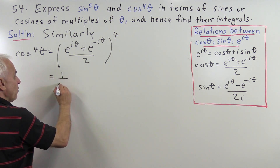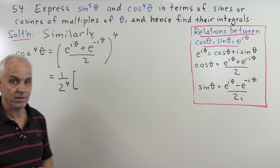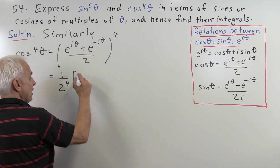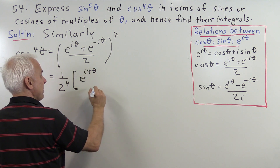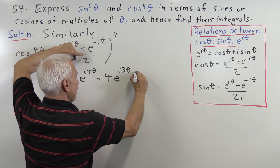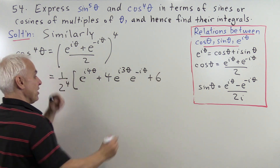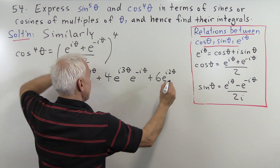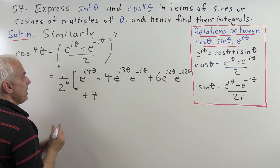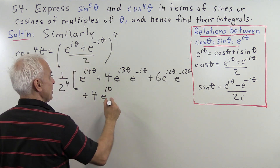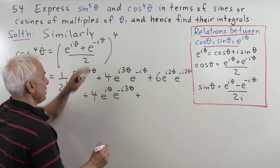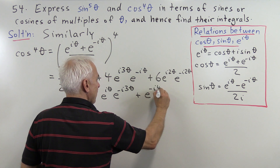When we expand that out, we get 1 over 2 to the fourth. Using the binomial theorem for n equals 4, with coefficients 1, 4, 6, 4, 1, we get: e to the i4 theta, plus 4 times e to the i3 theta times e to the minus i theta, plus 6 times e to the i2 theta times e to the minus i2 theta, then the 4 e to the i theta terms, and finally e to the minus i4 theta.